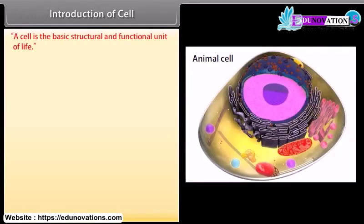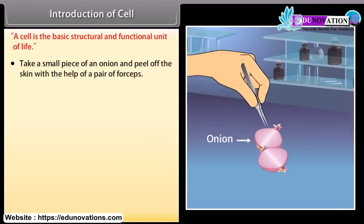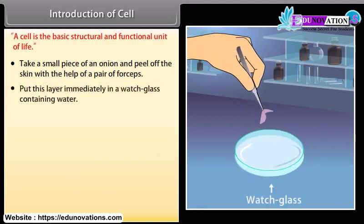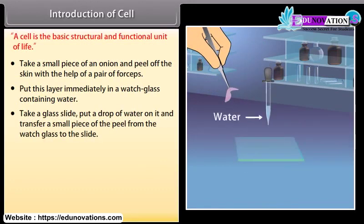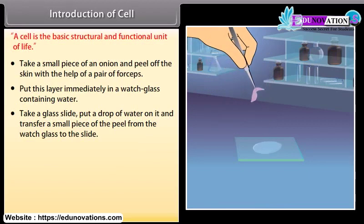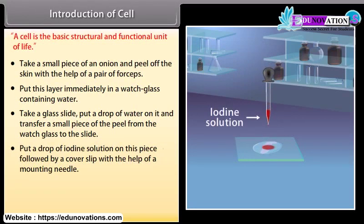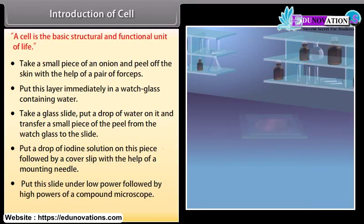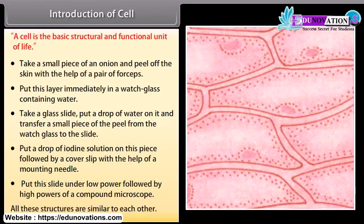A cell is the basic structural and functional unit of life. In the experiment, take a small piece of an onion and peel off the skin with the help of a pair of forceps. Put this layer in a watch glass containing water. Transfer a small piece of the peel to a glass slide with a drop of water, add iodine solution and a cover slip, then observe under low and high powers of a compound microscope. All these structures are similar to each other.